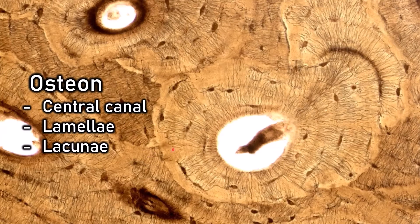Lastly, you see how there are all these black lines radiating out from the central canal? Those are called canaliculi. The canaliculi is how nutrition from the blood supply coming up through the central canal is able to reach the osteocytes living within the lacunae.